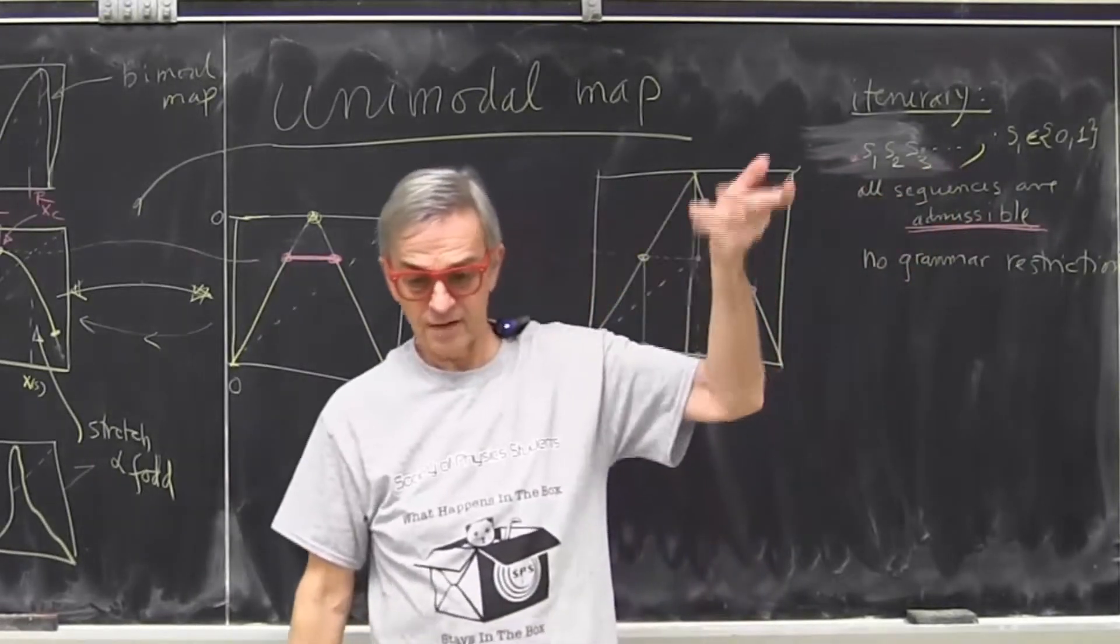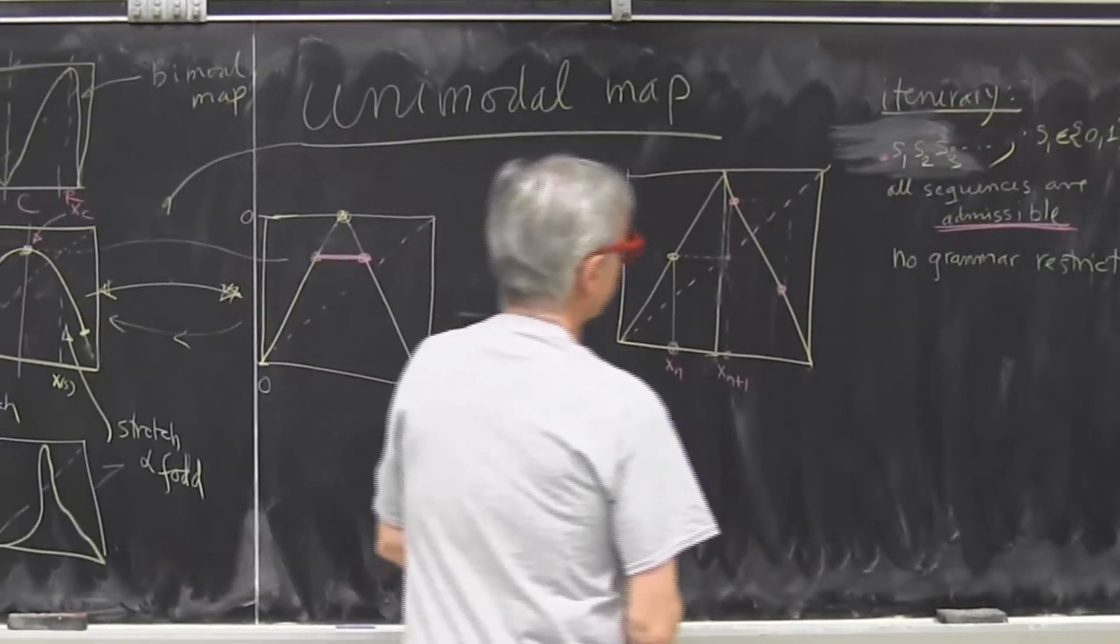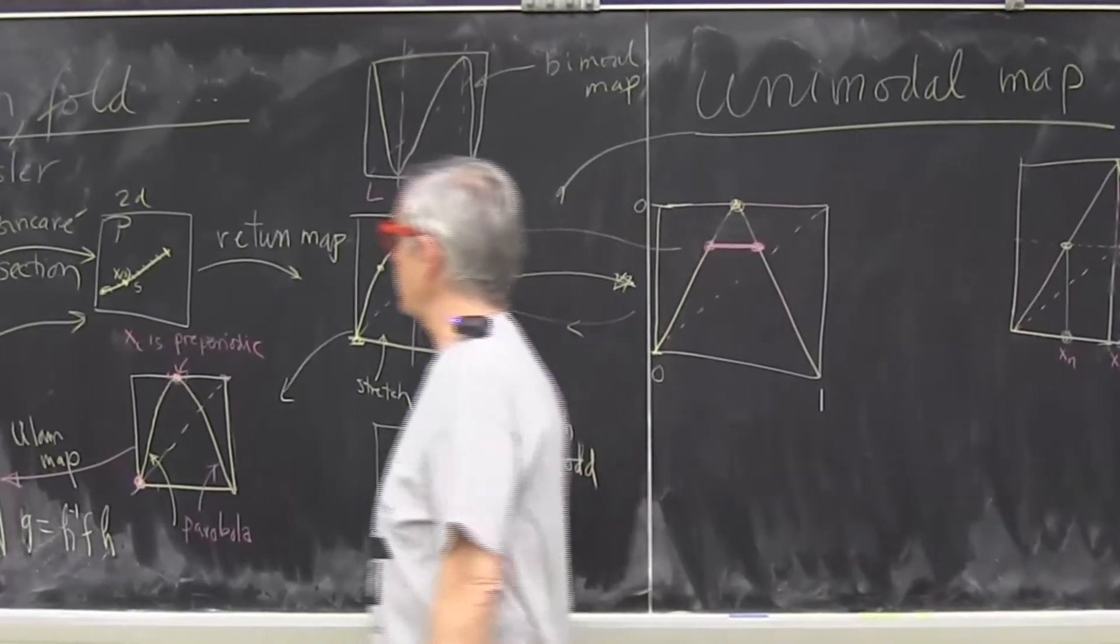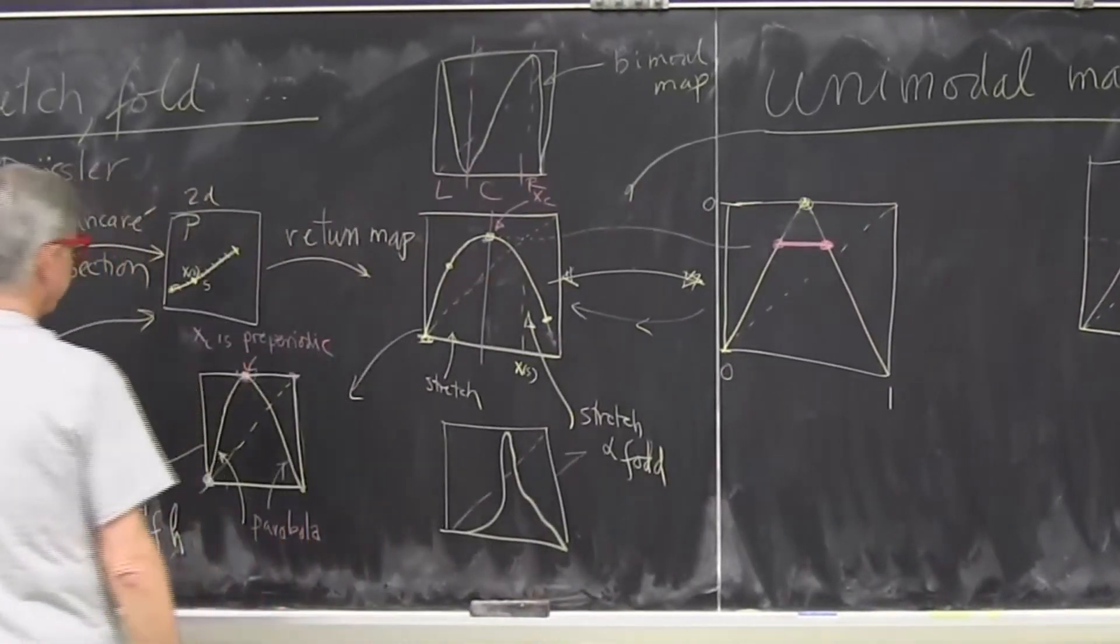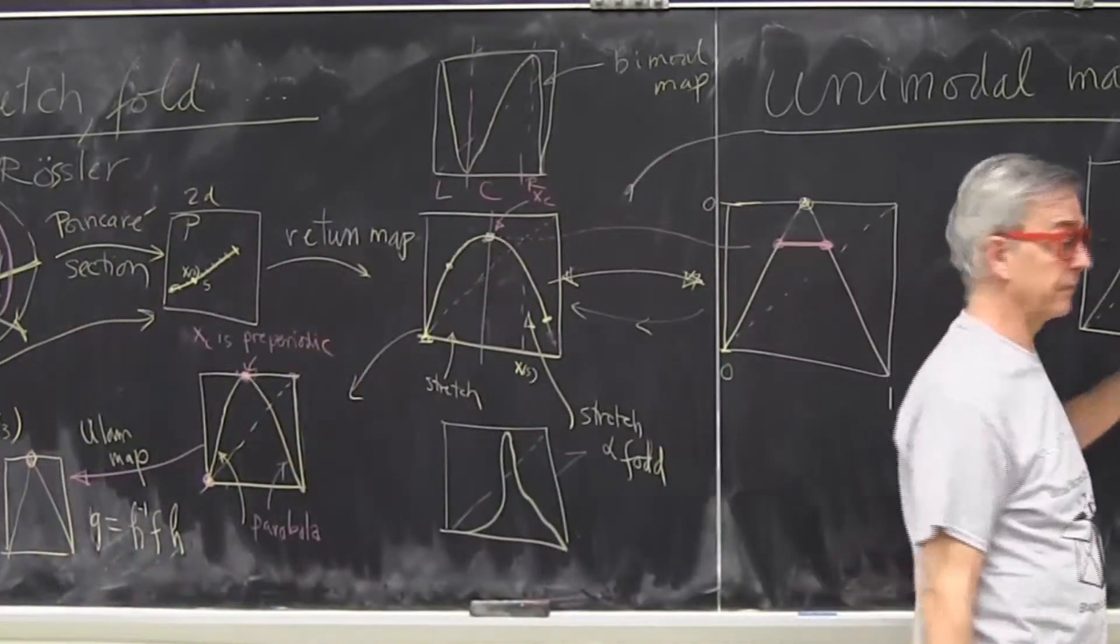You can go left and right, right, right, left, right, whatever you want to do. So that's unrestricted grammar. But when you look at the Rössler system or any system that we really look at, this is extremely non-generic behavior.